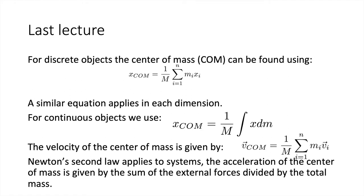A quick recap of the most important ideas from the last lecture. We were looking at how to calculate the centre of mass. For discrete objects, the x location of the centre of mass is equal to 1 over the total mass times the sum of the mass of each component times the position of each component, and a similar equation applies in each dimension. For continuous objects we break the object into small increments each with mass dm, and find the centre of mass using 1/m times the integral of x dm.